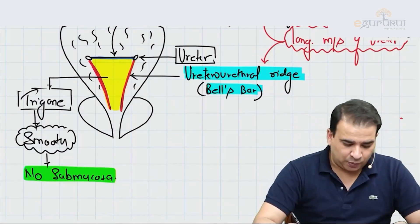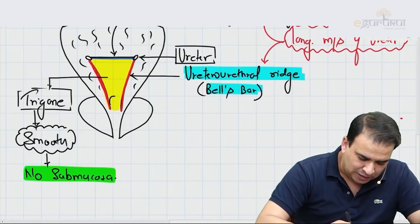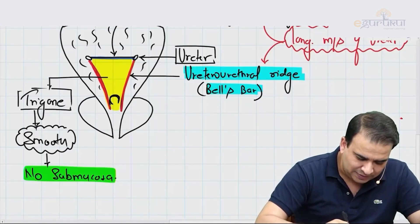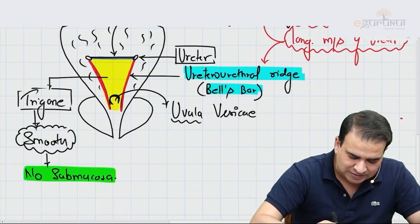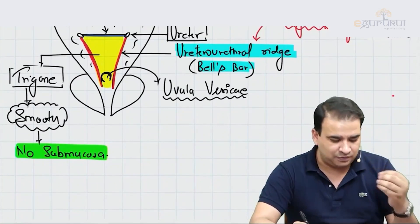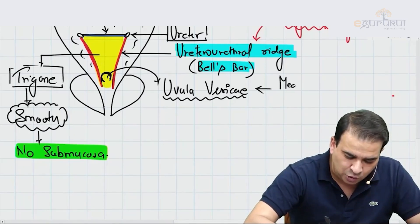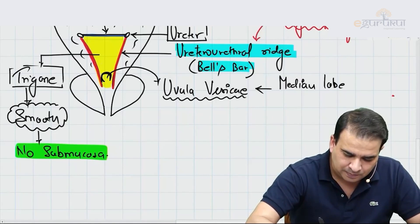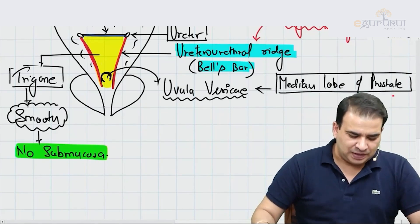Another important question from the interior of the bladder: in the male bladder you will see an elevation close to the apex of the trigone, and this elevation is called the uvula vesicae. This uvula vesicae — this tongue-like, uvula-like projection at the apex of the trigone — is because of the median lobe of the prostate. It is the median lobe of the prostate which produces this elevation called the uvula vesicae.